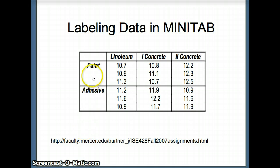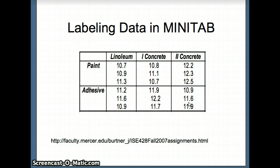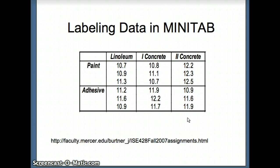To clarify that, the rows in this data set are either paint or adhesive, so two rows. There are nine numbers in the paint row and nine numbers in the adhesive row. One hypothesis will be: is the mean for paint the same as the mean for adhesive? That's a test of the row means. We can also check for the columns — we have six numbers in the linoleum column, six in the concrete one column, and six in the concrete two column. Are those means all the same? That's checking the flooring factor.